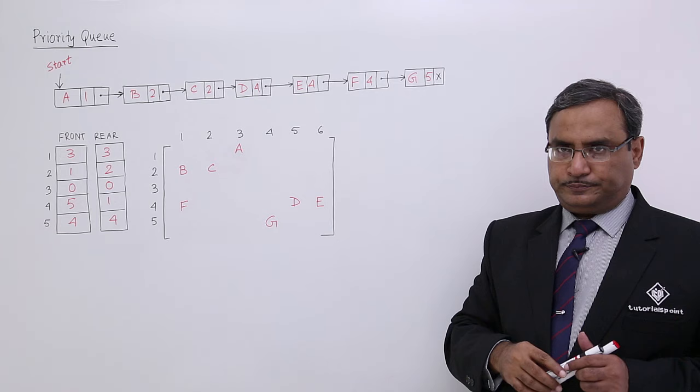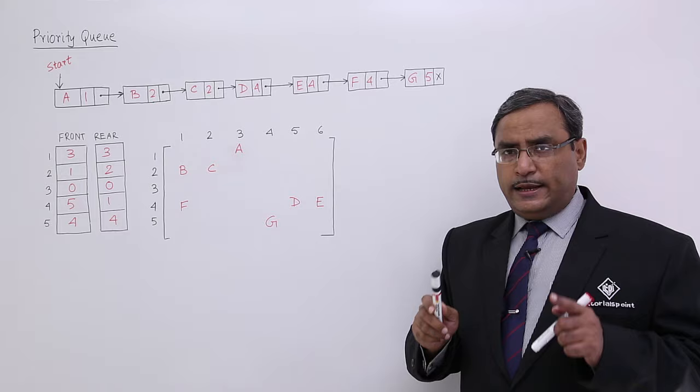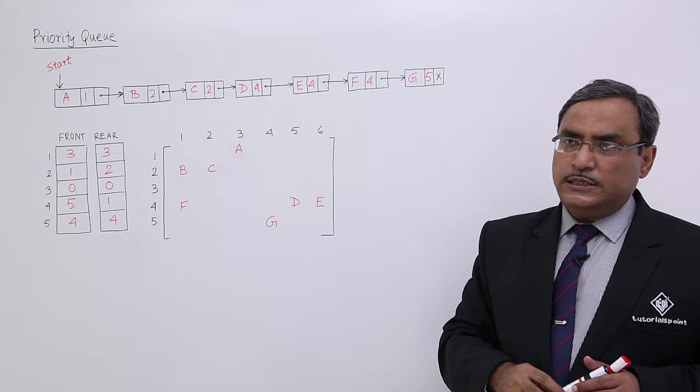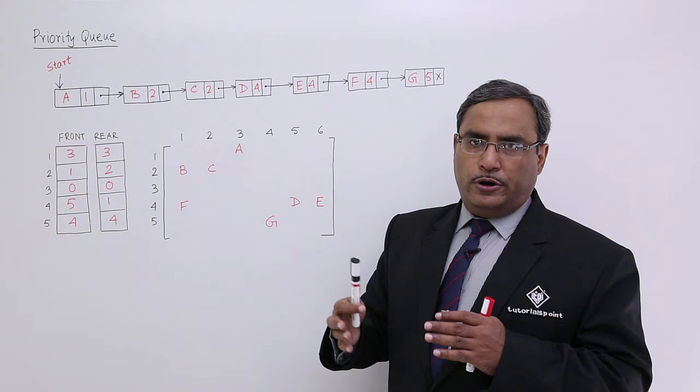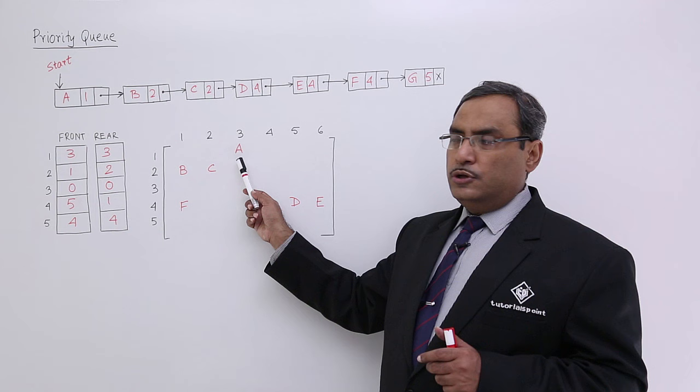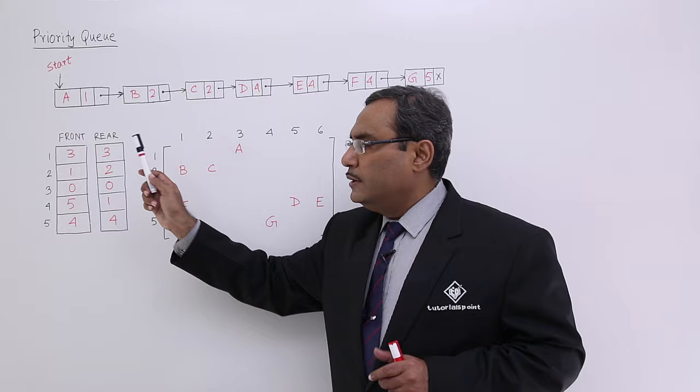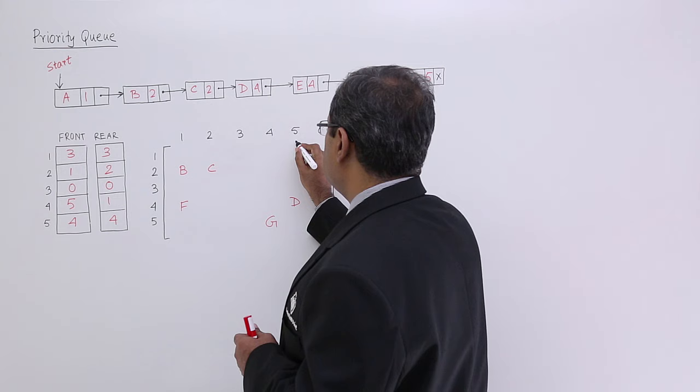The same priority queue can also be expressed using one array, one two-dimensional array, and two one-dimensional arrays. We are having A with priority 1. These are the priority numbers and these are the number of nodes with that priority. With priority 1, I am having a single node A, so its front and rear will be at location number 3. I have taken this 3 very arbitrarily — I could have written this one at a different place, in which case they would become 5 and 5.